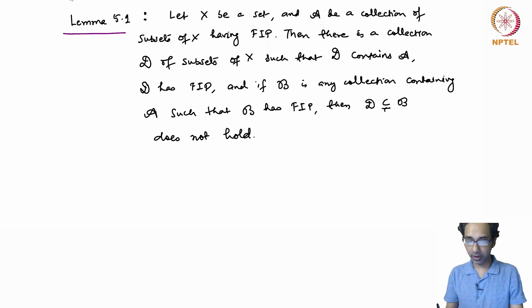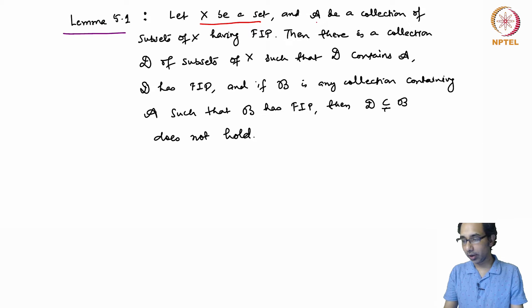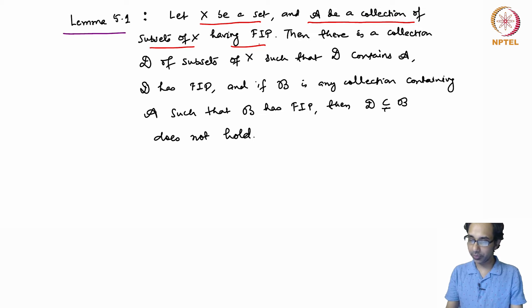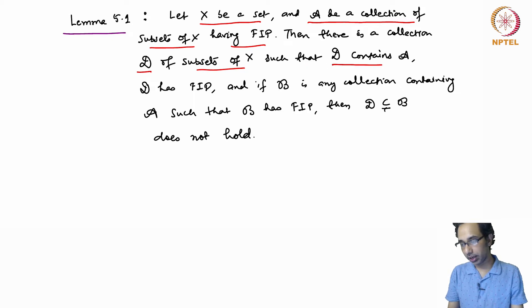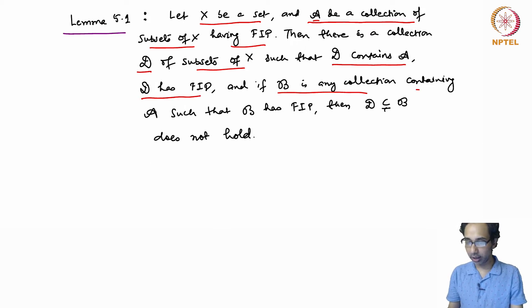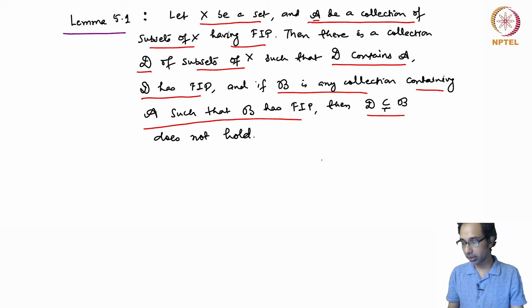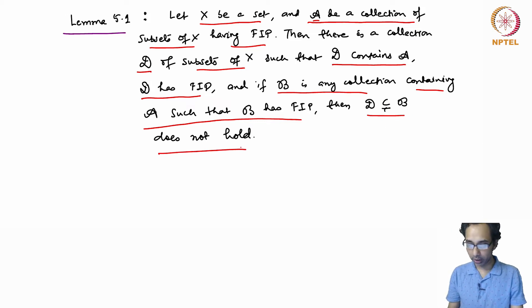Let us recall Lemma 5.1: if you have a set X and a collection A of subsets of X which has the finite intersection property, then there is a collection D of subsets of X such that D contains A, D has the finite intersection property, and if B is any other collection containing A with the finite intersection property, then D cannot be a proper sub-collection of B.